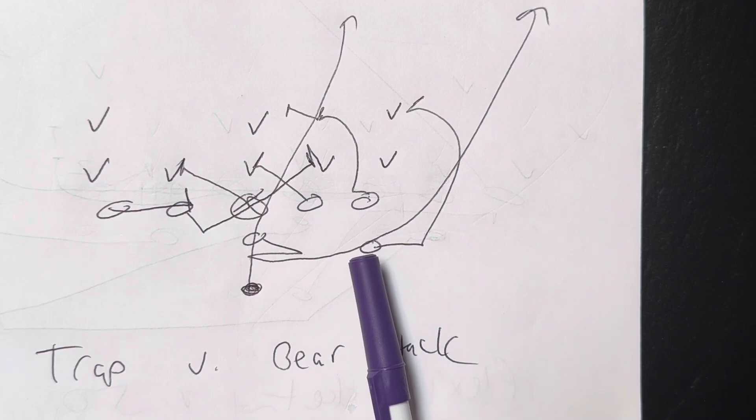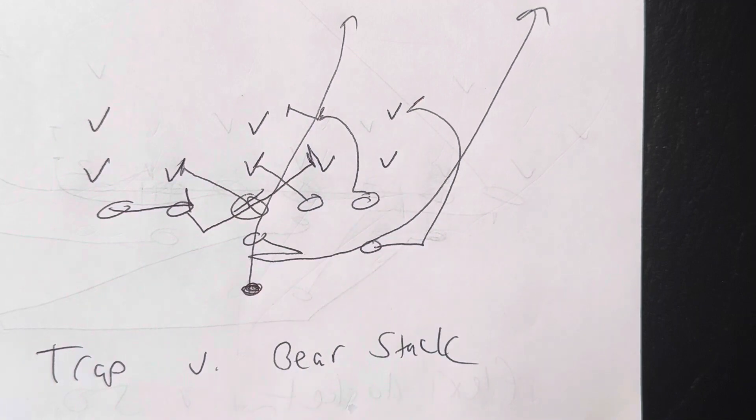A-back is going to line to the call side. He's going to take three flat steps, step at 45 degrees, and arc the overhang.